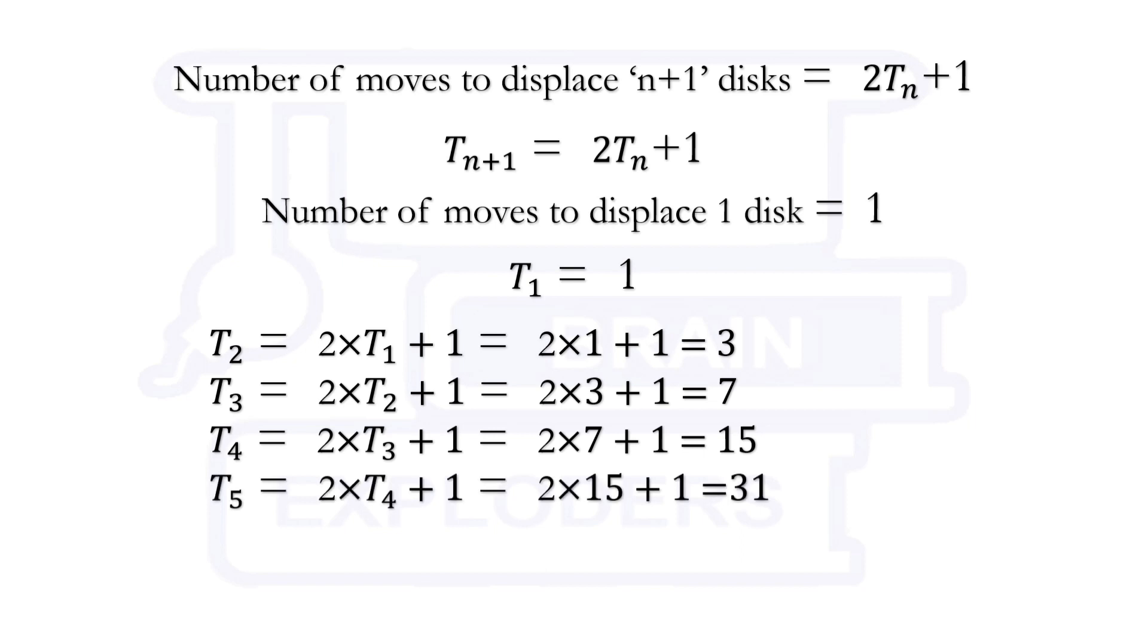Now, 3, 7, 15, 31. Many of you are familiar with this pattern. Yes, we can write all these numbers as 2 to the power n minus 1. So, in general for n number of disks we can write Tn is equal to 2 to the power n minus 1 and this is the general solution of the problem.